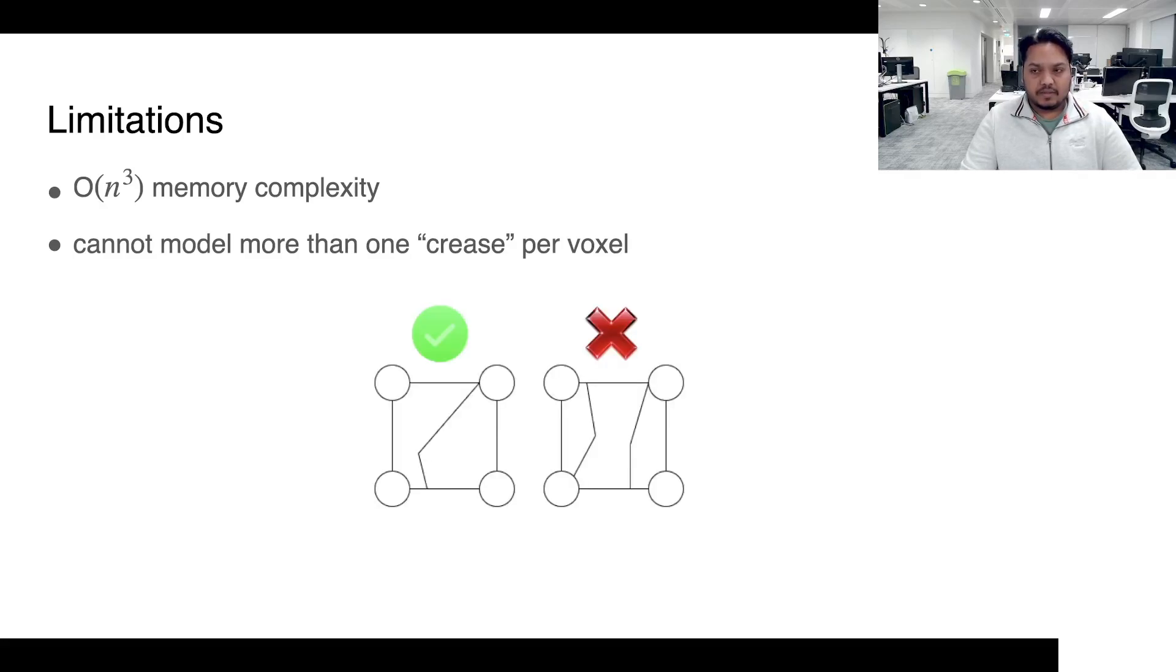As is the case with any research, our method also has some limitations. Firstly, we inherit the expensive memory storage requirement from voxel grids, which is a restriction on the implementation side. But as a core representation, in our opinion, the fact that ReLU field can only model one crease per voxel is quite a big limitation.